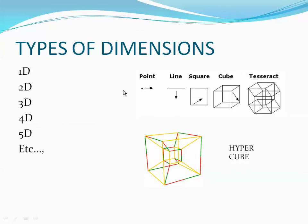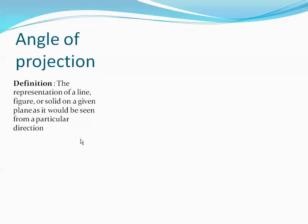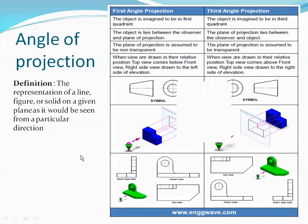Next, the definition of angle of projection: the representation of a line, figure, or solid on a given plane as it would be seen from a particular direction. For example, here is an object and a plane — I'm extending all the edges and creating a 2D figure. That is essentially angle of projection — I am projecting this object onto the plane.